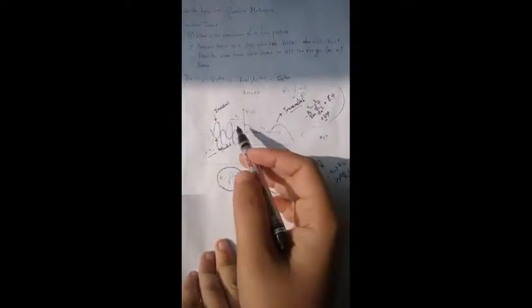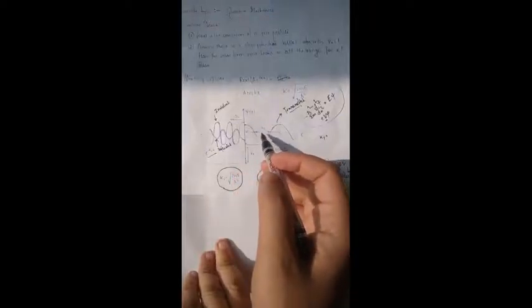We can definitely see that K2 is smaller than K1. And the wavelength is defined as 2π by K and as K1 is greater than K2, lambda 1 will be smaller than lambda 2. And so, we have drawn this picture like this one.